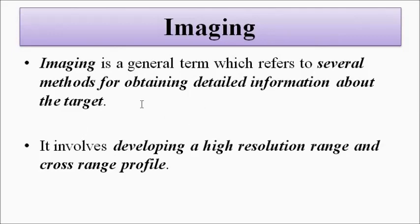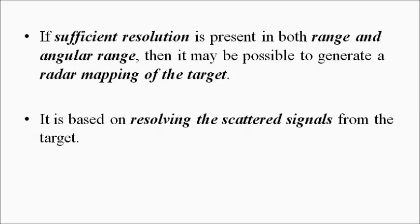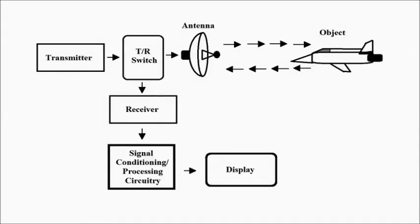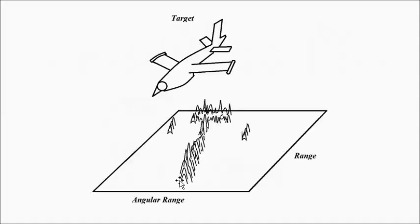Imaging is basically the process of combining the data and information related to the target—range resolution and angular or cross-range profile—combining them to form a general mapping of the target. This basically involves the signals that are reflected or re-radiated back from the target, and depending on the time of travel, the time gap, the amplitude, the frequency, the phase, the nature of the echo signals will form a mapping of the target.